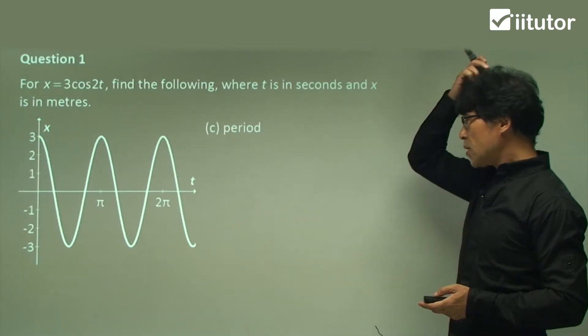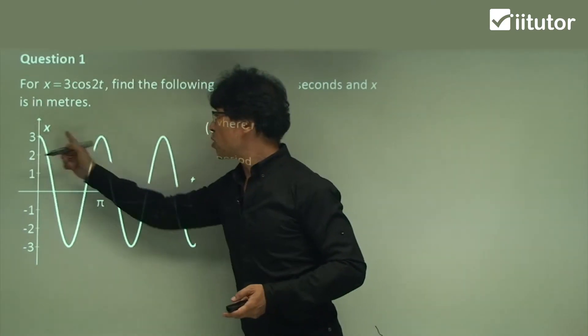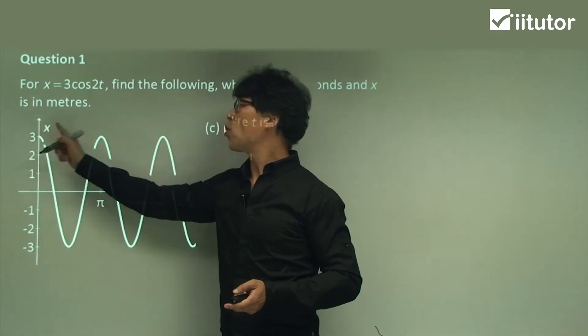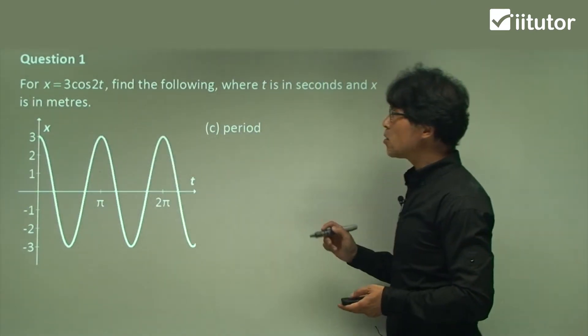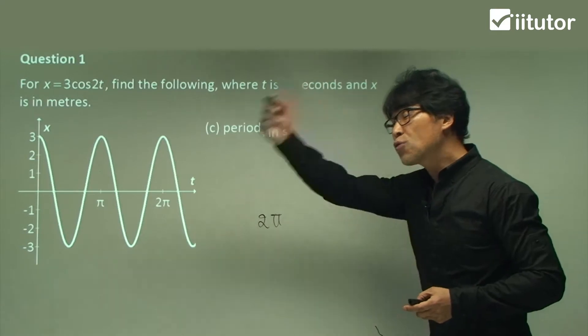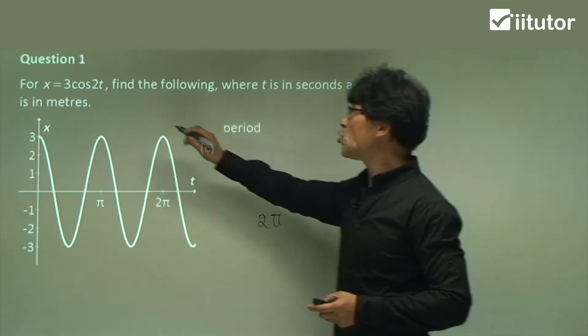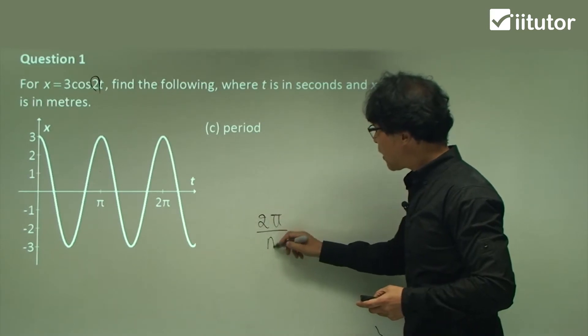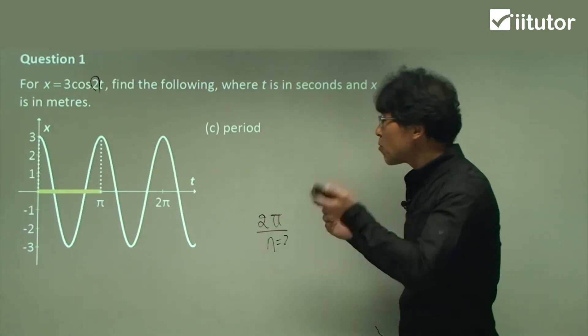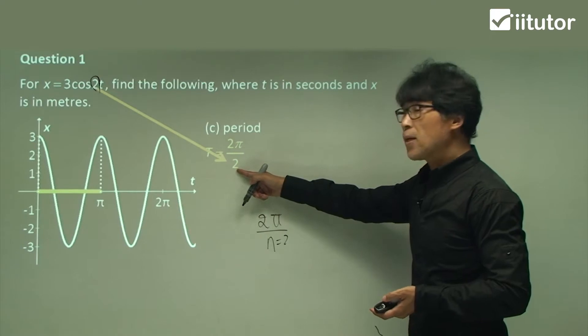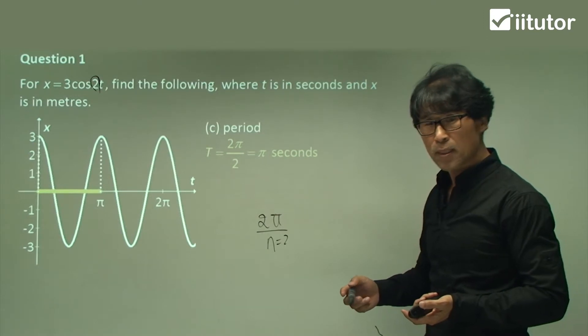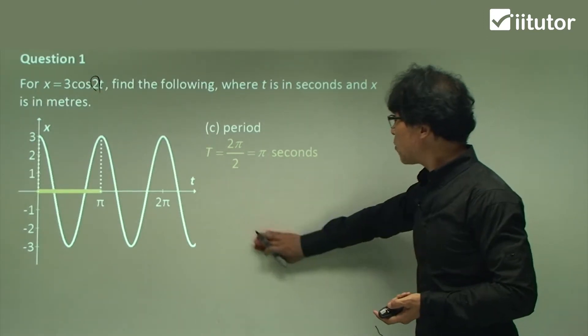It takes π seconds from this maximum point to the second maximum point. In terms of the formula you can remember, one full period used to be 2π, which is 360 degrees. And then divide by this number, usually n. So that is 2 at this time, so π. How do you find π for other questions? 2π divided by n. But n value is 2 right now, so it is π seconds.